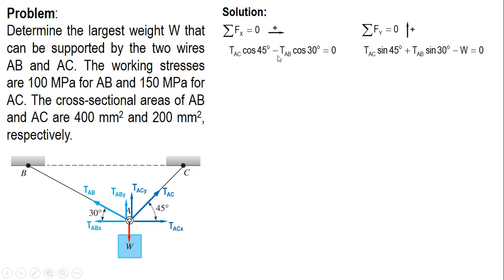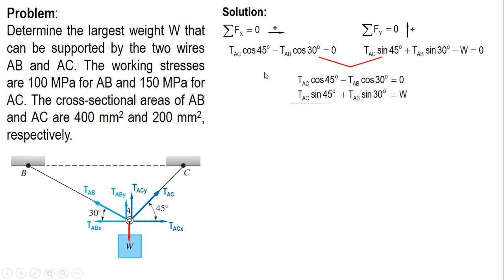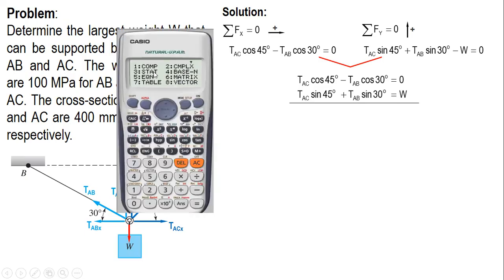We have two unknowns, T_EC and T_AB, so let's use a calculator instead of the method of elimination. With these two equations, when you use a calculator, assume W as 1, then attach W to the values of T_EC and T_AB after solving.